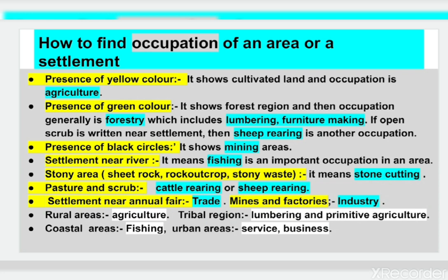Presence of black circles shows mining areas. Settlement near a river means fishing is an important occupation. Stony areas — like sheet rock, rock outcrop, or stony waste — indicate that stone cutting is an important occupation. Settlement near an annual fair means trade is an important occupation.